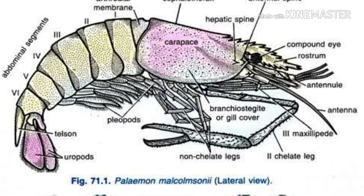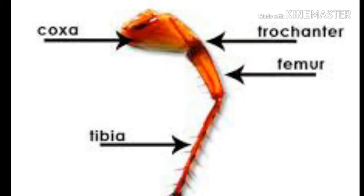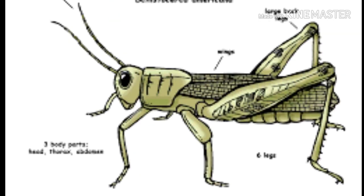Body is bilaterally symmetrical, triploblastic, with organ system level of body organization. They are metamerically segmented and coelomate animals. Body is divided into three regions: head, thorax, and abdomen. But in some, head and thorax fuse to form cephalothorax or prosoma. They have jointed appendages for different functions — 'arthro' means jointed, 'pods' means appendages.